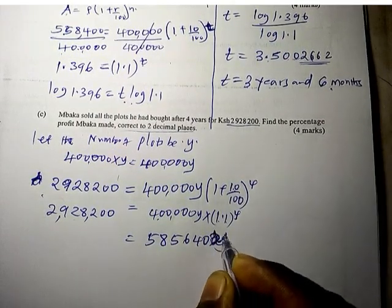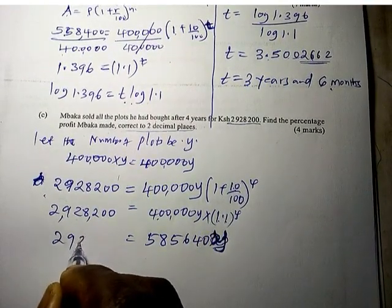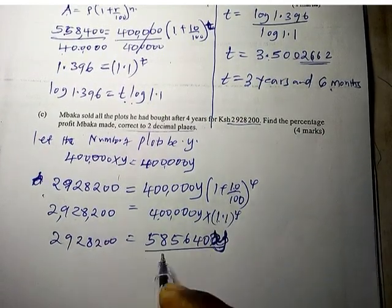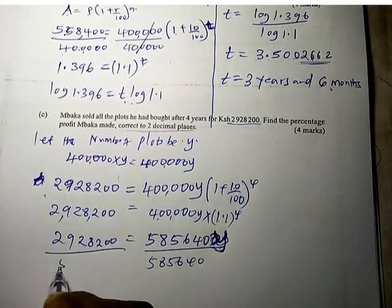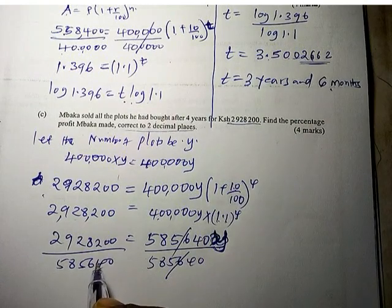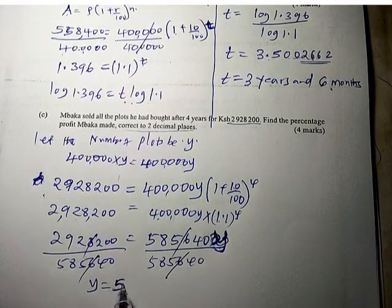To get Y, we divide by 585,640. So Y equals 5. He had 5 plots.